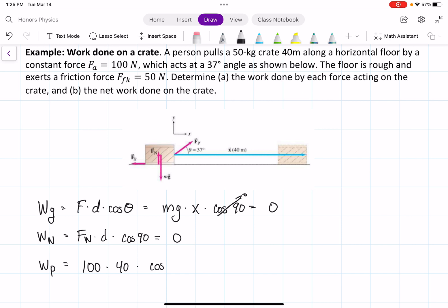times cosine of 37. If we plug that in, what we get is 3200 joules.